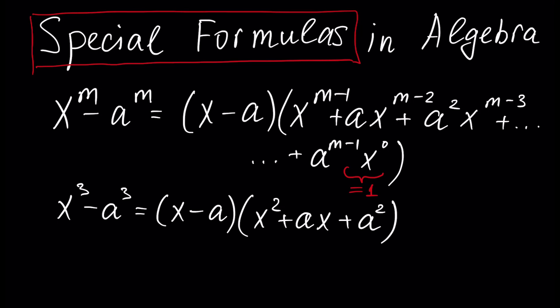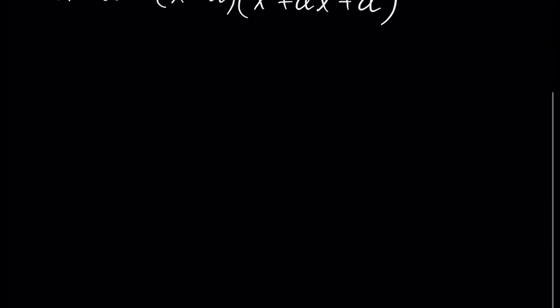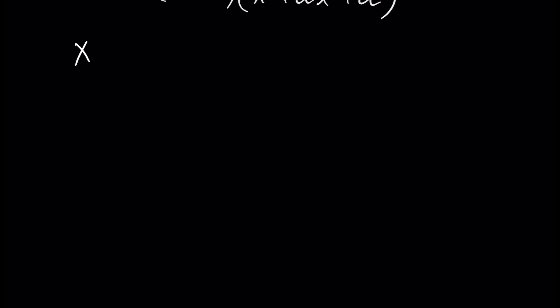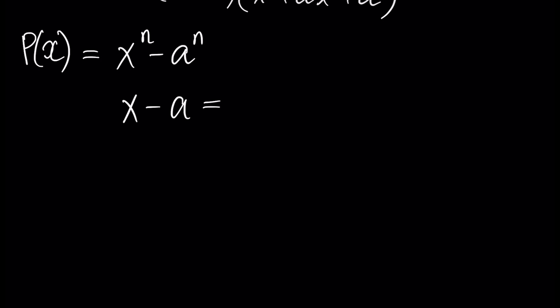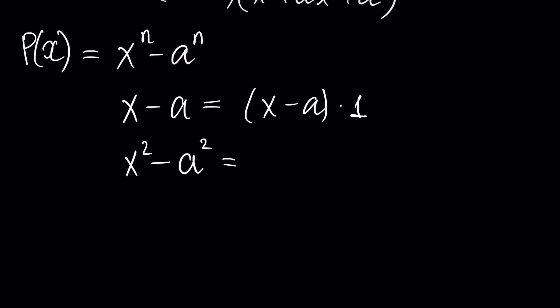Let's begin to prove our formula. From previous tutorials, let's define a polynomial p(x) which is equal to x to the power n minus a to the power n. For the special case when n equals two, we have x squared minus a squared, and from the shortcut special formulas we covered earlier...